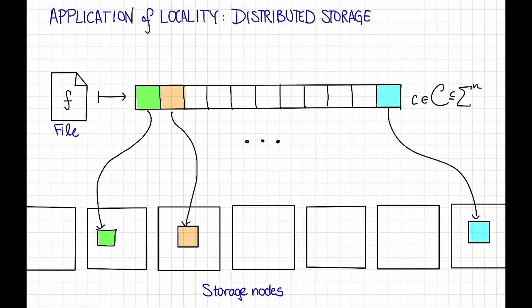The reason to do this is that now this information is robust if one of these storage nodes goes down. So let's say, for example, that this storage node fails. Either it's temporarily unavailable or it bursts into flames or whatever. What that corresponds to in our codeword is an erasure of the corresponding symbol.